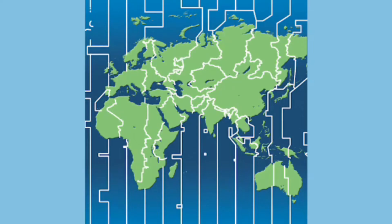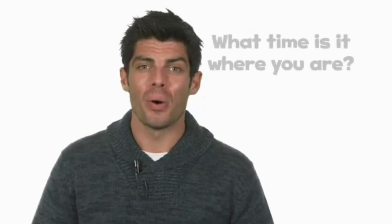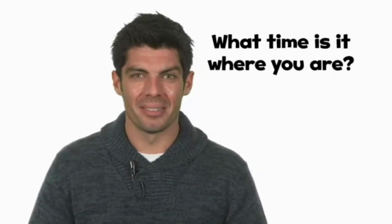There are 24 different time zones in the world. There's a difference of an hour between each one. So, when it's 10 a.m. where you are, it'll be 10 p.m. on the opposite side of the world. What time is it where you are?